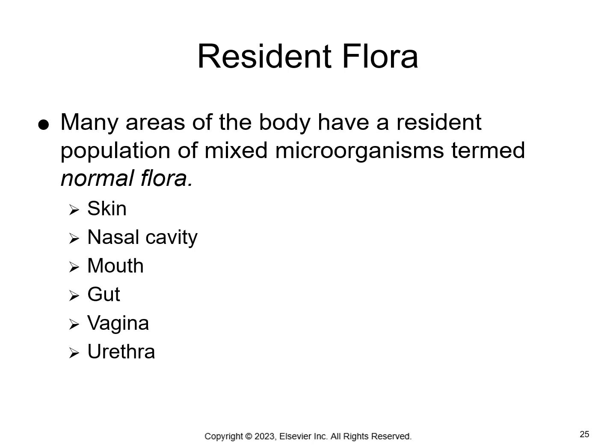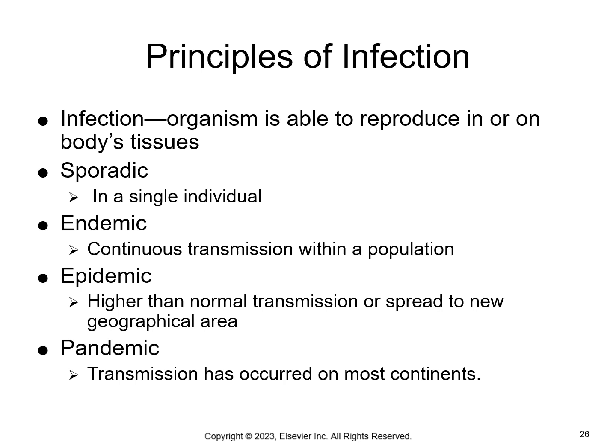So back to the term resident flora: these are microorganisms present in the body on the skin, nasal cavity, mouth, gut, vagina, and urethra — these are your normal flora of the body. An infection happens when a microbe or parasite is able to reproduce in the body's tissues. Infections can occur sporadically in a single individual, be endemic in a small area, epidemic with higher-than-expected transmission in an area, or pandemic, which is worldwide.